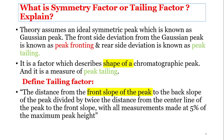Let's see what are the important SST parameters. First is the symmetry factor or tailing factor. Theory assumes an ideal symmetric peak which is known as a Gaussian peak. The front side deviation from the Gaussian peak is known as peak fronting, and the rear side deviation is known as peak tailing. This type of peak shape is known as peak fronting; the other is known as peak tailing.